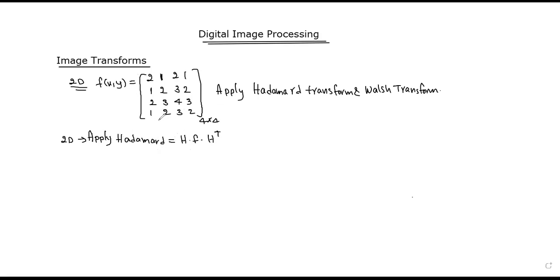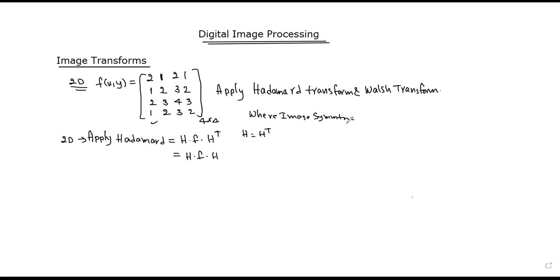Where the image is symmetric, H is equal to H transpose, so the formula simplifies to H times f times H. It is a symmetric matrix, so the transform becomes H times f times H.